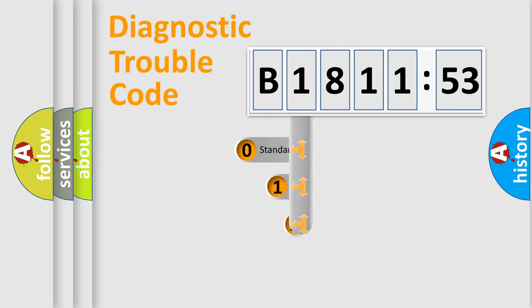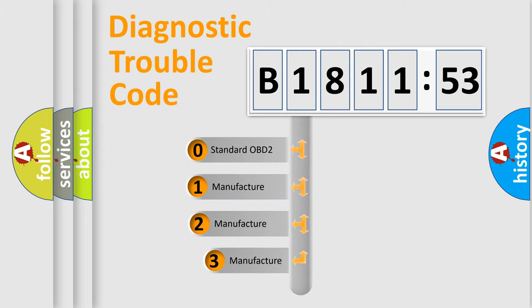Powertrain, Body, Chassis, Network. This distribution is defined in the first character code.